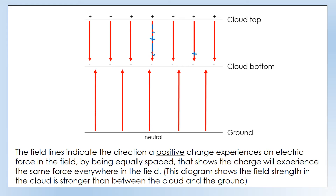So in the whole top section, wherever we put a positive charge it'll experience the same force. Same in the bottom section — wherever we put a positive charge it would experience the same force. But in different fields they'd experience different sized forces: in the bottom field there'd be a smaller force, and in the top field there'd be a bigger force. That's what our diagram is showing.